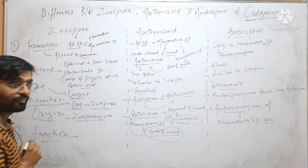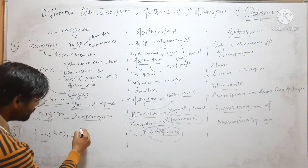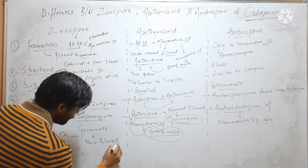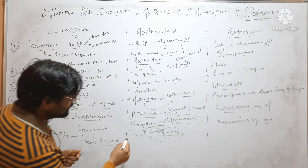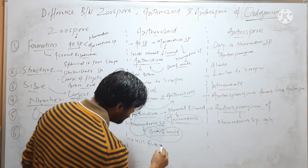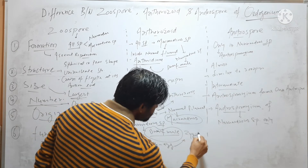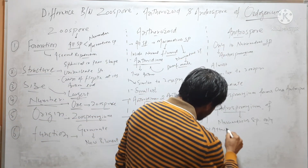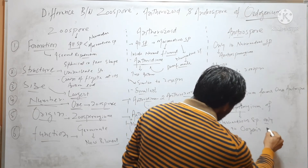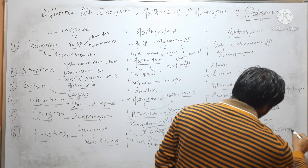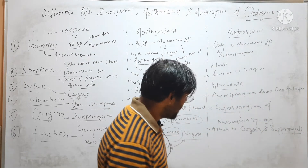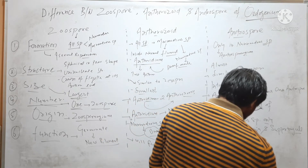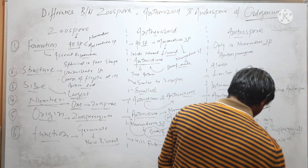The next parameter is Function. Zoospore will directly germinate and form a new filament. Antherozoid will fuse with the egg and form a Zygote. Androspore will attach to Oogonium or the supporting cell, also called the suffultory cell, and here it will germinate to produce a dwarf male or Nanoandrium.